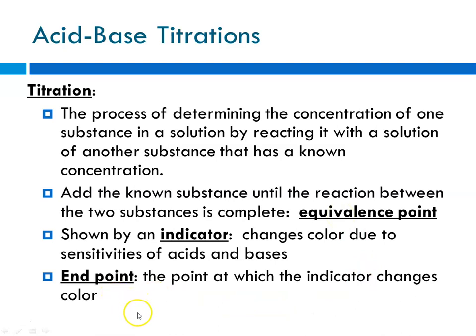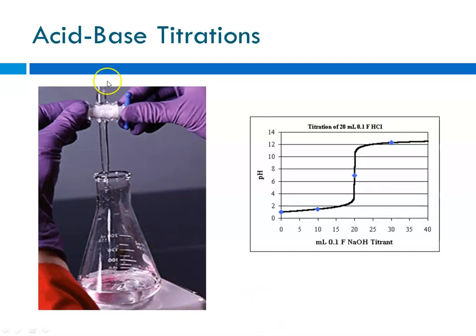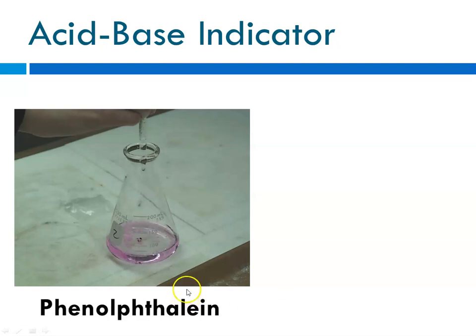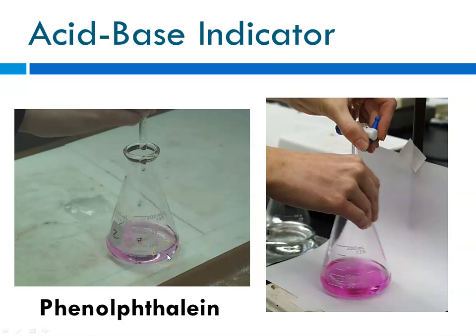You use that so-called end point — the point where your indicator tells you you've reached the equal point — to make calculations. This is what a titration looks like. You use something called a burette, which allows you to add drop-wise your known solution to your unknown solution, looking for the point where there's an equivalent amount of acid and base. For example, with phenolphthalein, the indicator starts to turn pink when it becomes basic. If it turned a deep pink color, you knew you went too far — that there's more base than acid. So you add some acid again, going back and forth until you get the palest possible color, which tells you that you've reached your end point or equivalence point.